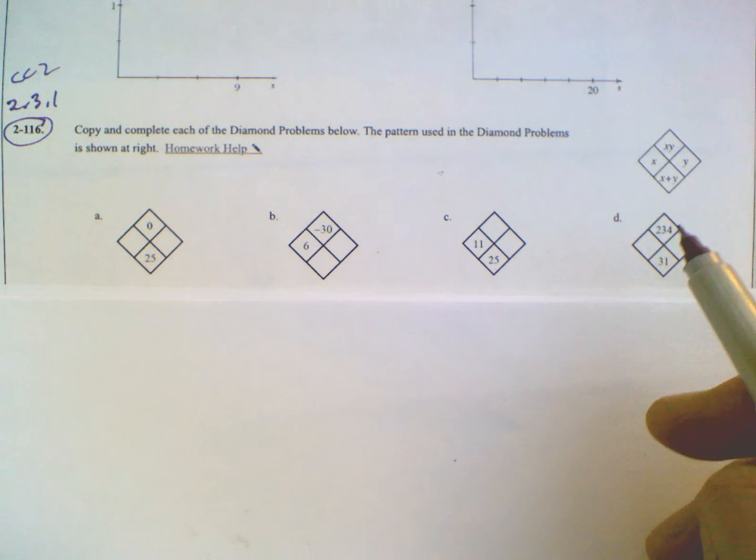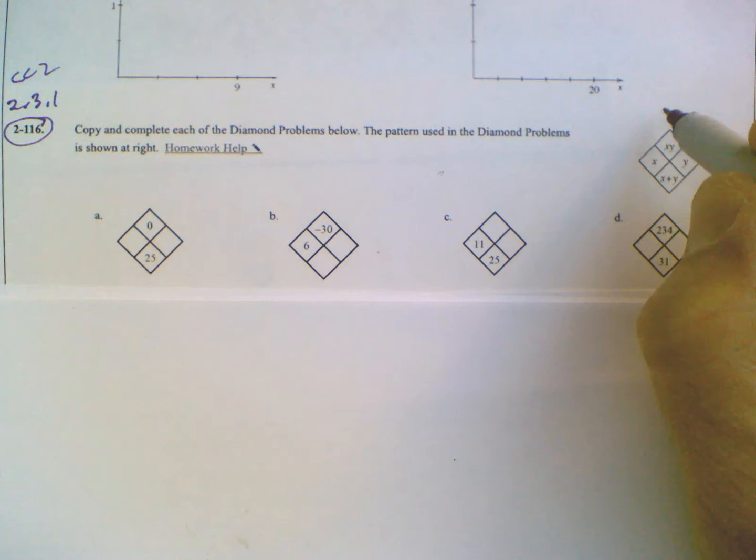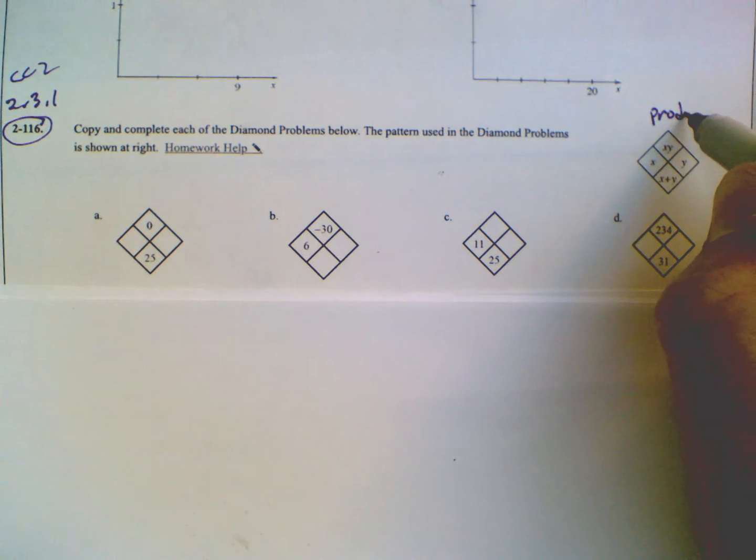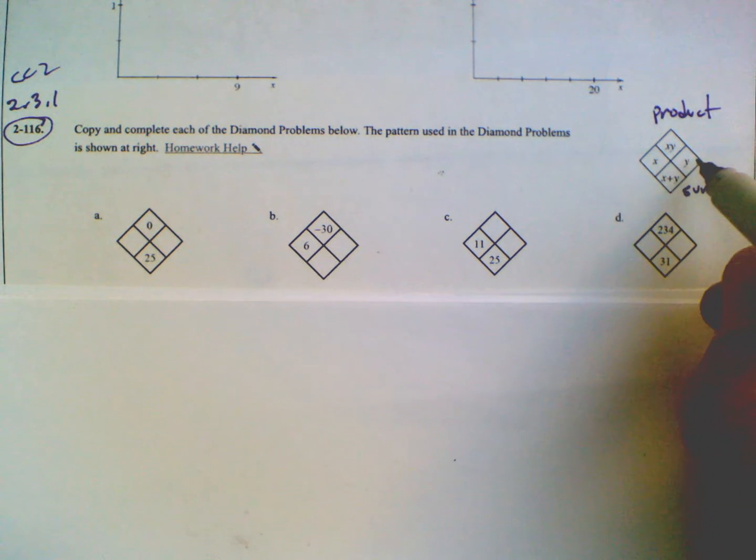So remember the diamond problem pattern right here? The top number is the product, and the bottom number is the sum, and then each of these are just the numbers that you would get the product from and get the sum from.